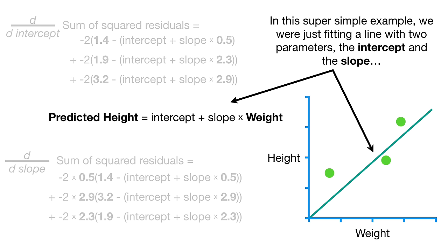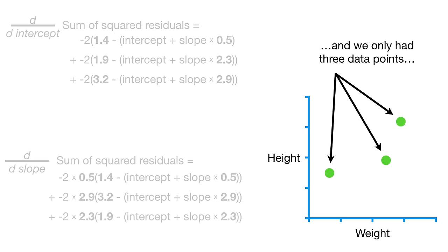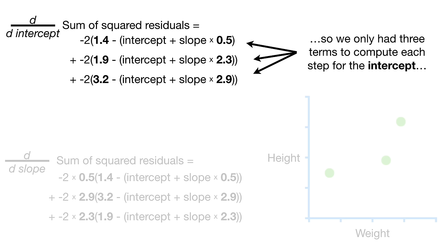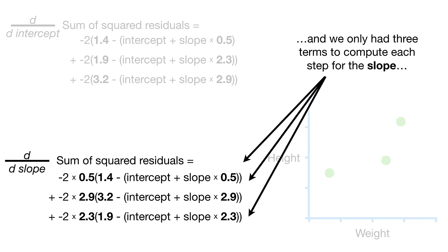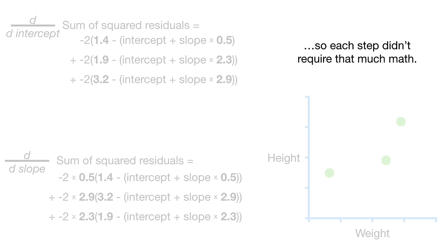Then we plugged in the initial guess for the intercept, zero, and the initial guess for the slope, one. We did the math, plugged the slopes into the step size formulas and multiplied by the learning rate, which we set to 0.01. Then we did the math.